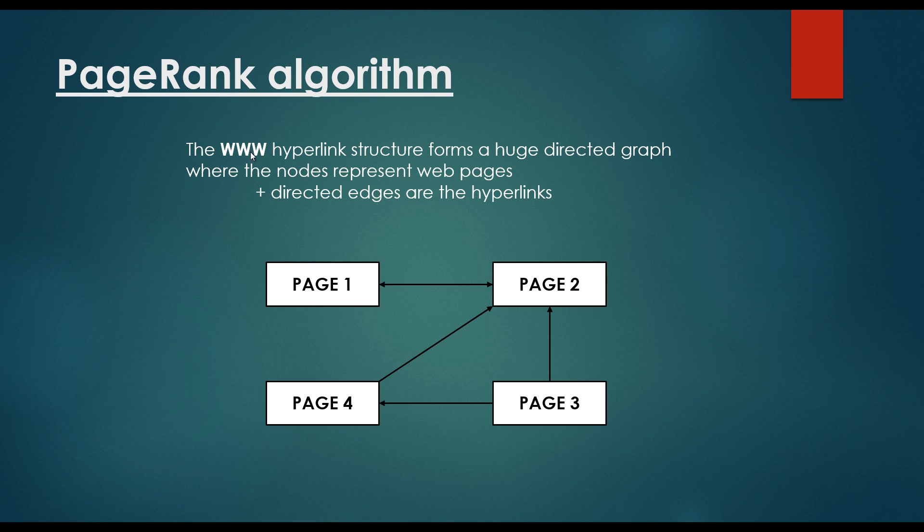So the World Wide Web hyperlink structure forms a huge directed graph, where the nodes represent web pages and directed edges represent the hyperlinks. So basically, we are able to represent or model with the help of a directed graph. The whole World Wide Web can be transformed into a directed graph.